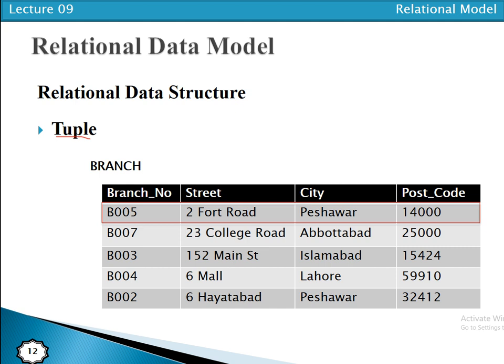Each row contains values, one from each attribute. For example, row one has one value for branch number and one value for street. Each row contains one value for each attribute. Just as attributes can be in any order, tuples or rows can also be in any order — if we take the first row and shift it to the end, the relation still conveys the same meaning.